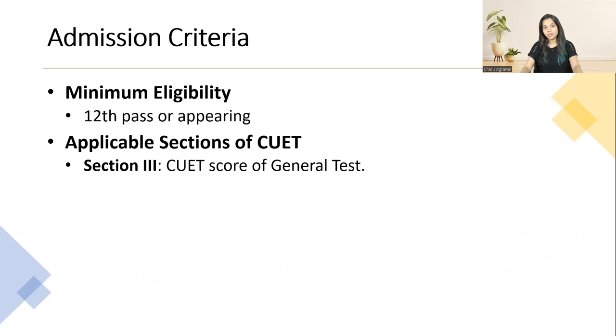The admission criteria of CUET: the minimum eligibility is 12th pass or appearing. The applicable section of CUET is Section 3, the CUET score of the general test.